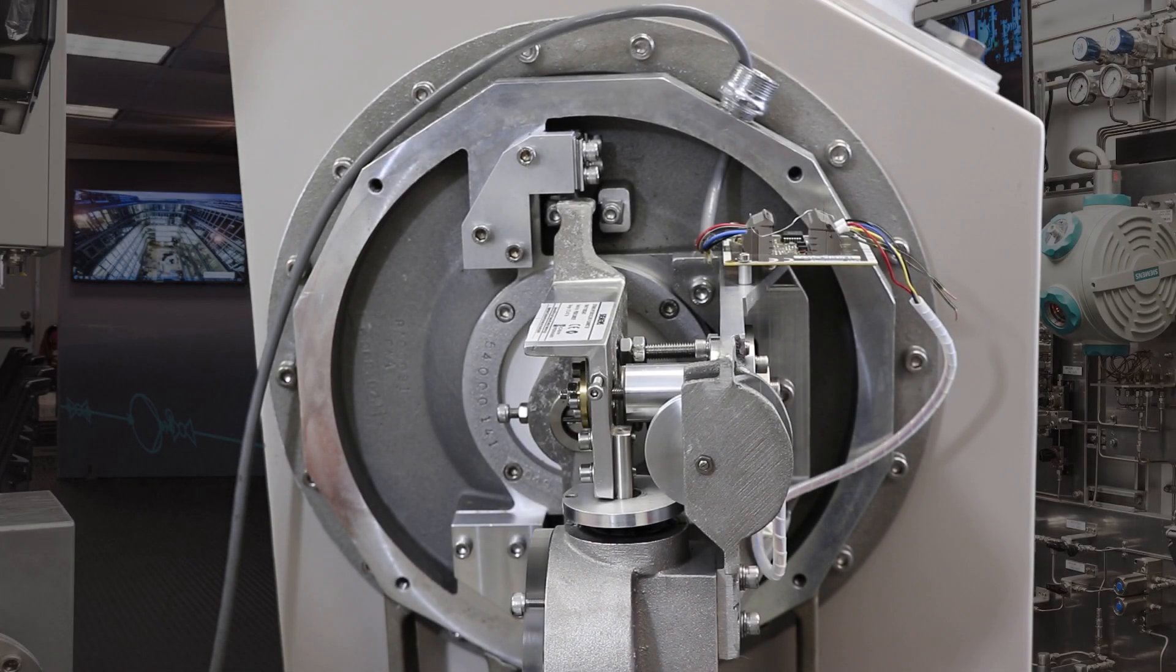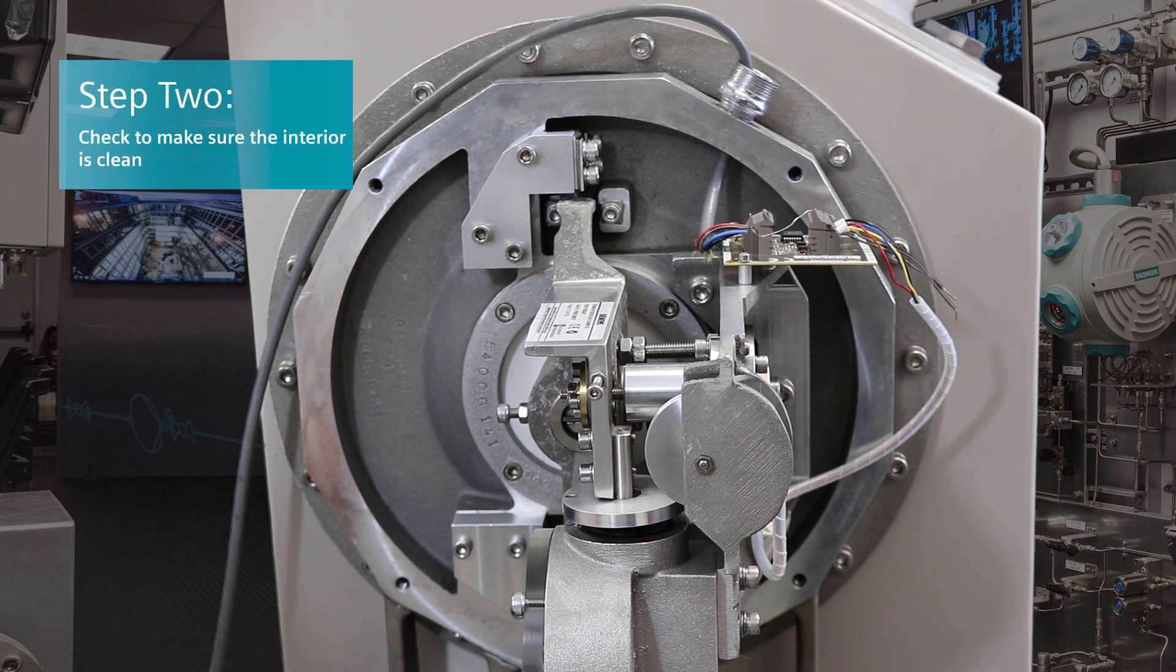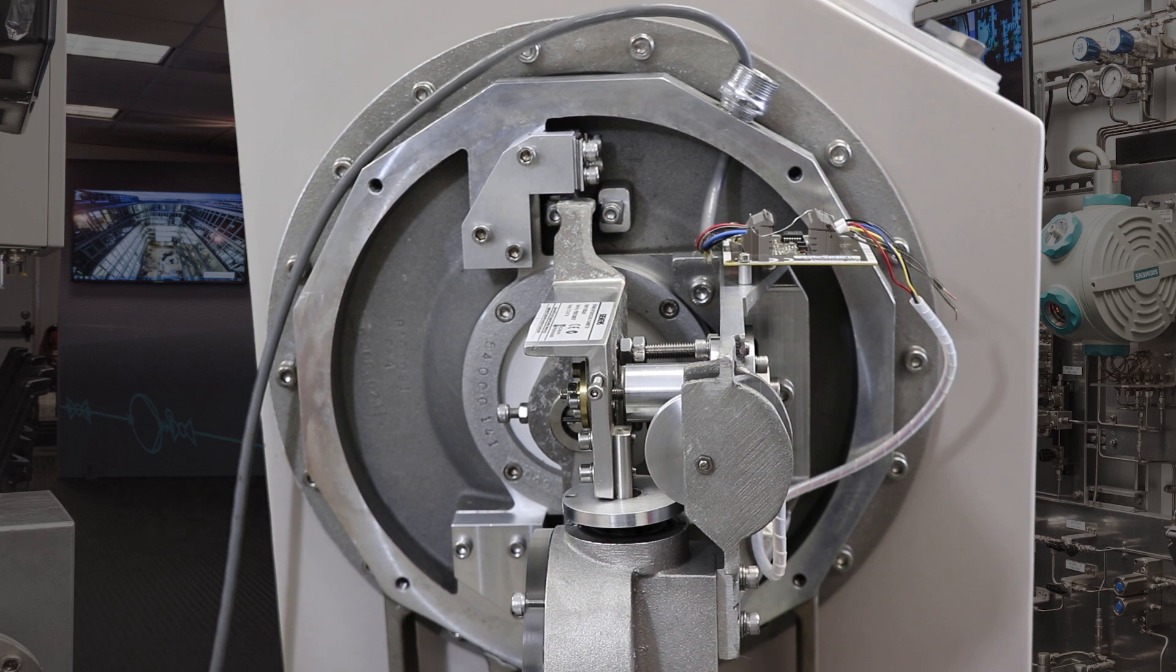After you inspect the sensing plate, you will go over to the sensing head and remove the cover. Check to make sure that the interior is clean at this time. If the interior is not clean and has product around it, it could mean that one of the gaskets is torn or bad.